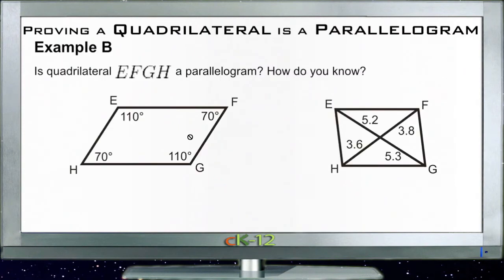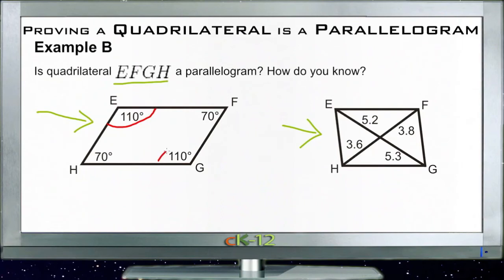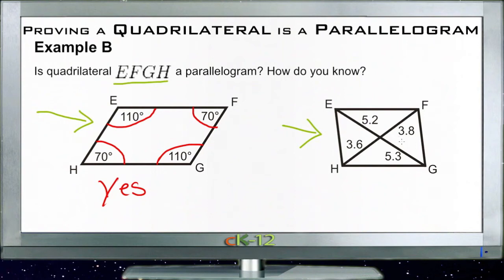Example B asks if quadrilateral EFGH is a parallelogram and how we know. There are actually two EFGH figures — one on the left and one on the right. On the left, we have a 110° angle at E and 110° at G — opposite angles that are equal — and H opposite F with both angles at 70°, also equal. Based on the Opposite Angles Theorem, this left figure is a parallelogram.